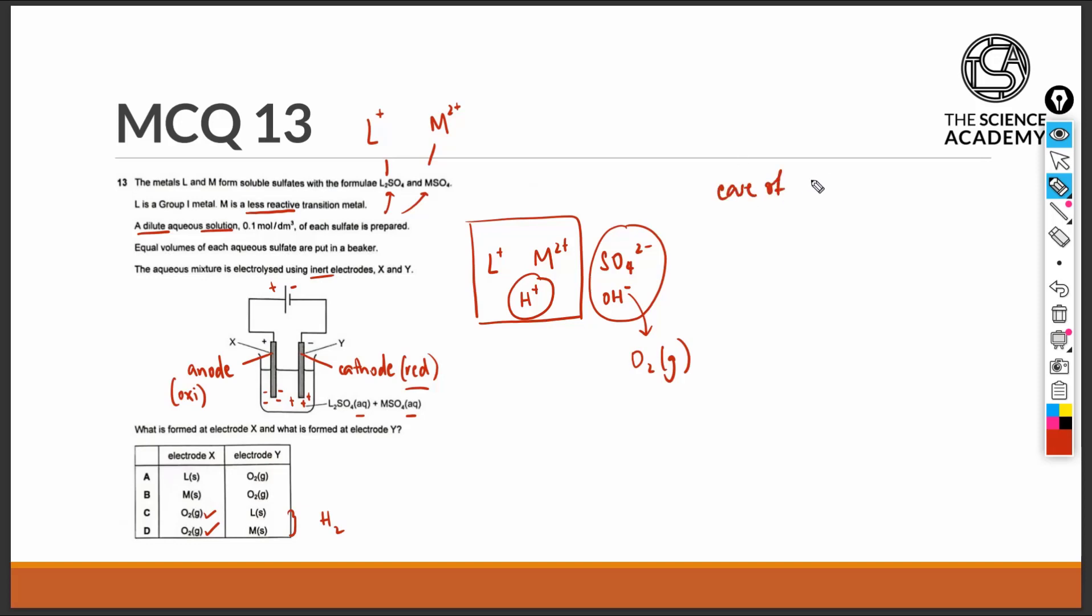We know that the ease of discharge from the electrolyte will increase down the reactivity series. L is a group 1 metal, and M is the less reactive transition metal, as stated in the question. As ease of discharge increases down the reactivity series, the M ion is going to be preferentially discharged into the metal.